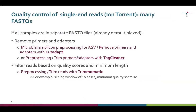If our data has already been demultiplexed — so we receive one FASTQ file for each of our samples — then we cannot use this handy all-in-one tool, but we can do exactly the same steps using a few different tools in Chipster. For removing primers and adapters, we can use either CutAdapt or TagCleaner. For filtering reads based on quality scores and minimum length, we can use Trimmomatic, which was introduced in the previous video.